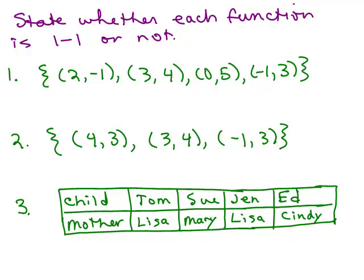Here are three functions — let's decide if they're one-to-one or not. For number one, since we already know the x values cannot repeat in a function, we look at the y values. The x values are 2, 3, 0, negative 1 — no repeats — and the y values are negative 1, 4, 5, and 3 — no repeats — so yes, this is one-to-one.